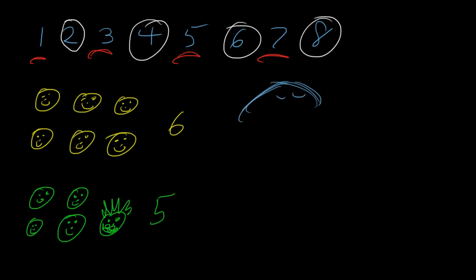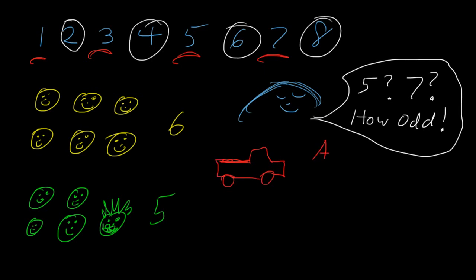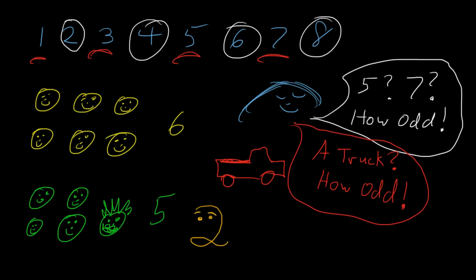So we call half of all integers odd, just because they don't adhere to the pattern of two. Can you think of anything else in the world that we would call odd when it's not even a rarity? And two is the only even number that also gets to call itself prime.